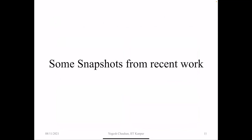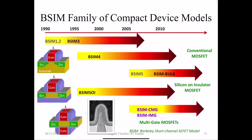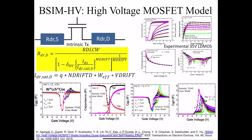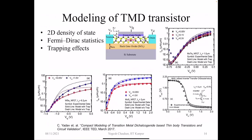Some snapshots from our recent work: we work on all the BSIM models — BSIM bulk, SOI, BSIM4, CMG, and IMG — all industry standard. We regularly collaborate with UC Berkeley in developing and releasing these models. We also developed BSIM HV, the high voltage MOSFET model, now part of BSIM bulk. We are working on 2D material transistors, where 2D density of states comes into picture and we need to account for Fermi-Dirac statistics and wrapping effects.